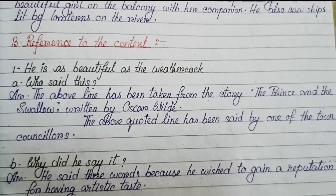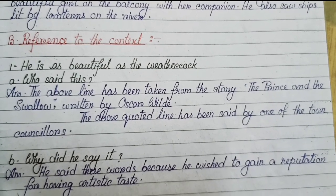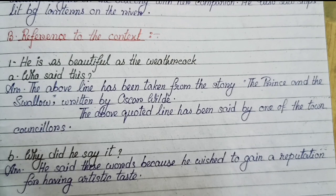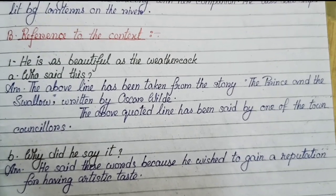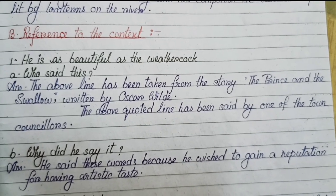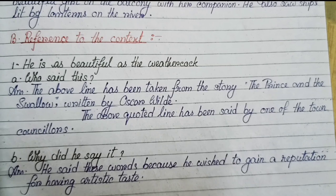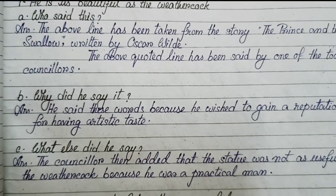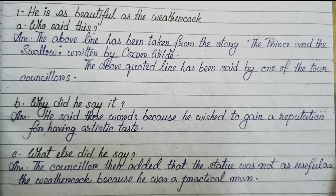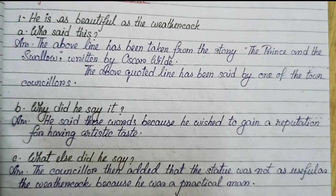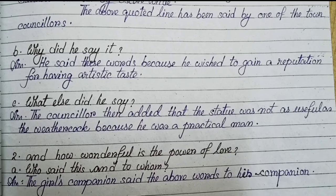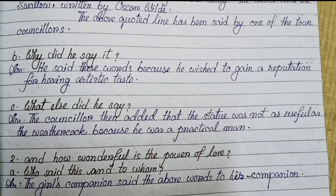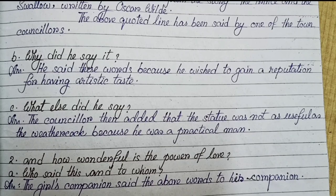Reference to the context. Number one: 'He is as beautiful as the weathercock.' Who said this? The above line has been taken from the story 'The Prince and the Swallow' written by Oscar Wilde. The above quoted line has been said by one of the town counselors. Part b: Why did he say it? He said these words because he wished to gain a reputation for having artistic taste. Part c: What else did he say? The counselor then added that the statue was not as useful as the weathercock because he was a practical man.